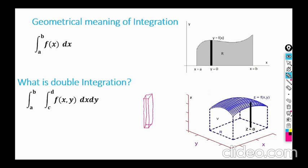For one cuboid, the width is dx and the length is dy, with dx and dy tending to very small values. As we break it further, we can fill the entire solid with these cuboids where dx and dy tend to zero — that is the double integral. The area of the base is dx dy, and f(x,y) is the height of that cuboid. Area of base times height gives the volume of one cuboid. Double integrating over the entire base as dx and dy tend to zero gives us the volume under the surface z = f(x,y).